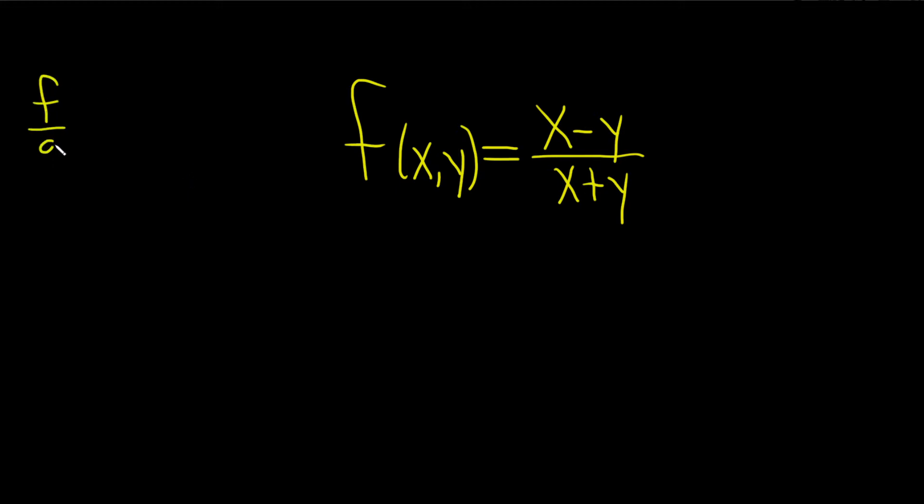you have a function f divided by g and you take the derivative. Think of f as your top function and g as your bottom function. So it's the derivative of the top times the bottom minus the top times the derivative of the bottom. That's all over the bottom one squared.